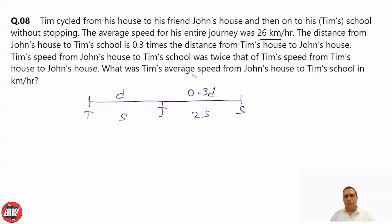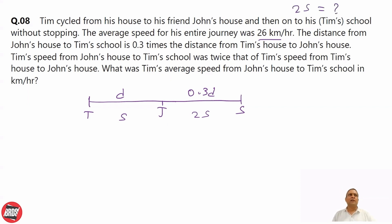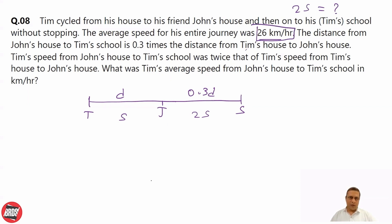We need to find Tim's speed from John's house to school, which is 2S. We are not looking for S alone — we are looking for the value of 2S. Now we use the average speed of 26 km per hour.